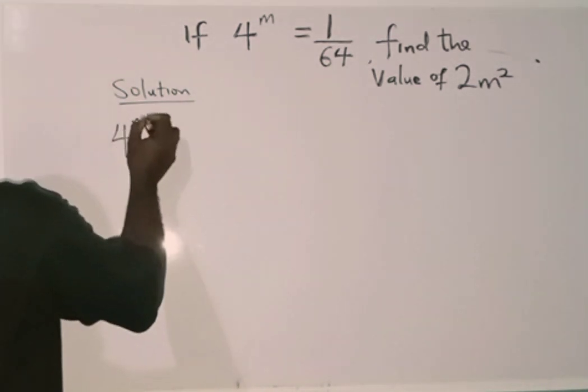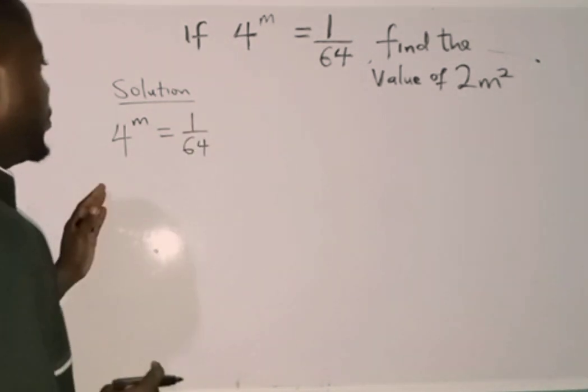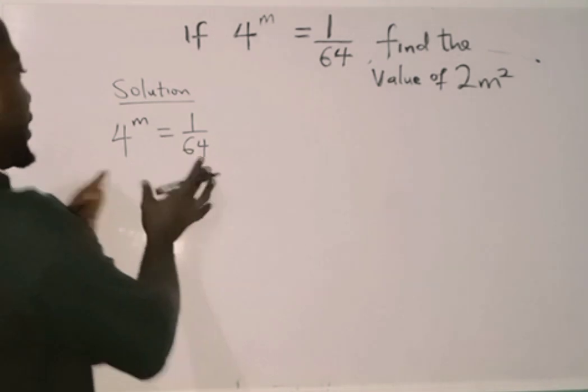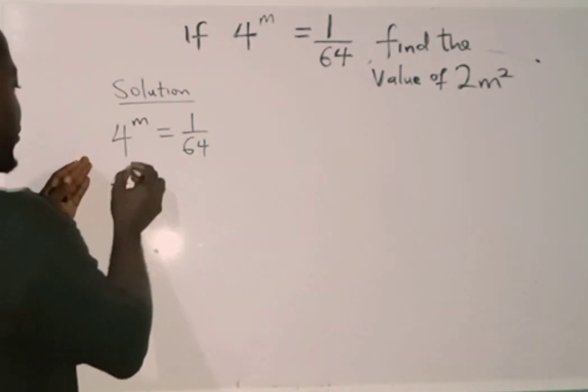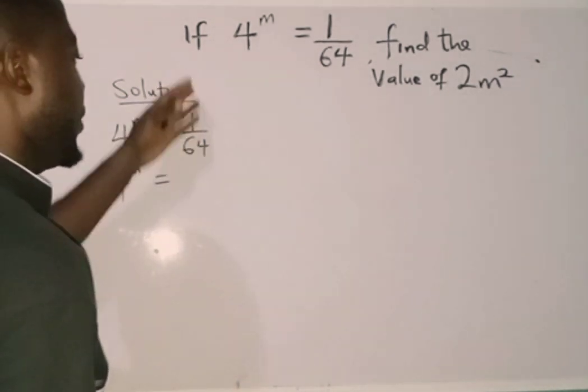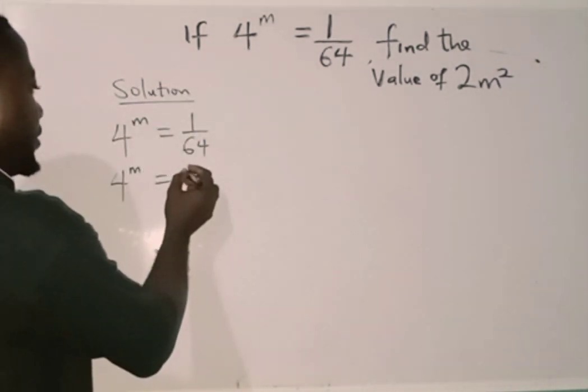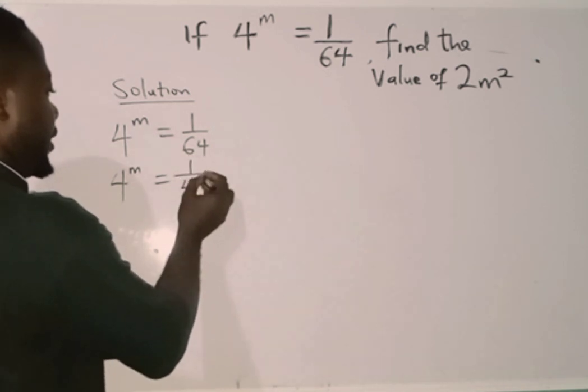I have 4 raised to power m equals to 1 over 64. The first thing I'm going to do is express both sides in base 4. Since this side is 4 raised to power m, I'm going to make sure this side is also 4 raised to power something. So in that case, this is going to be 1 over 4 raised to power 3.